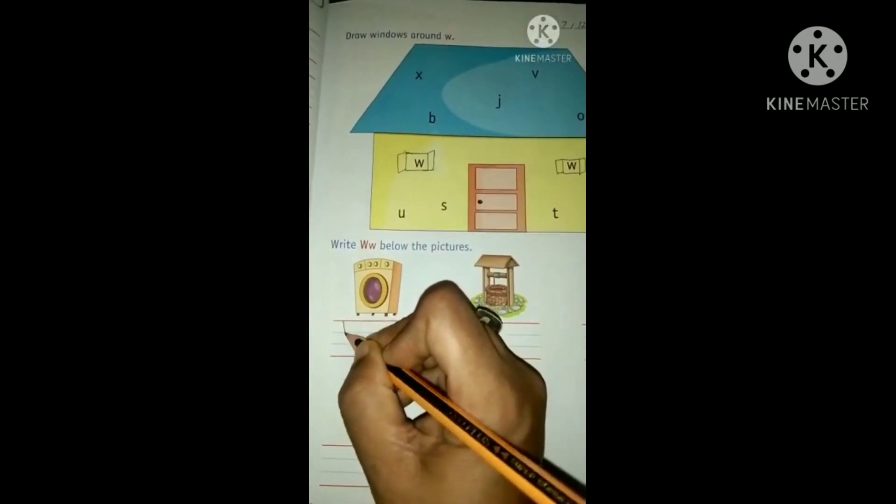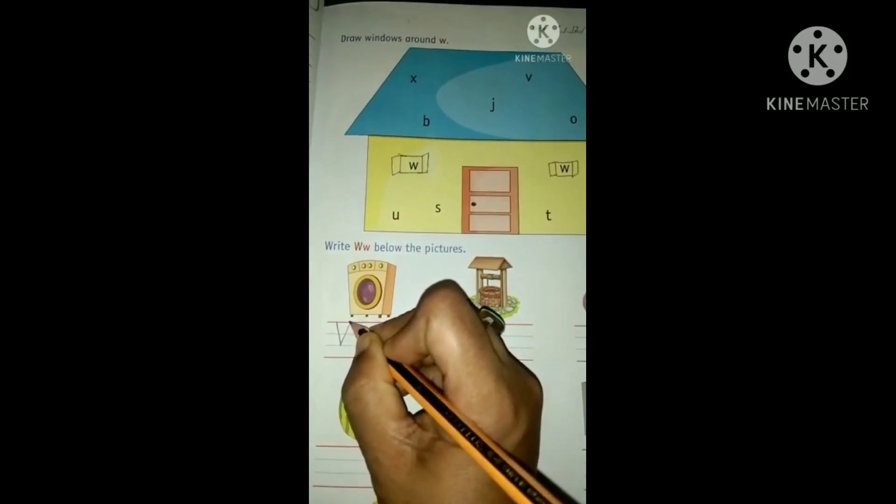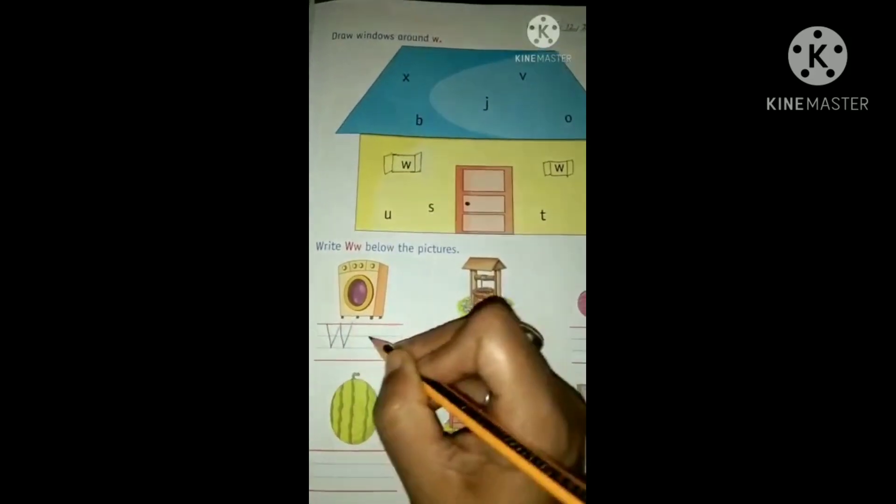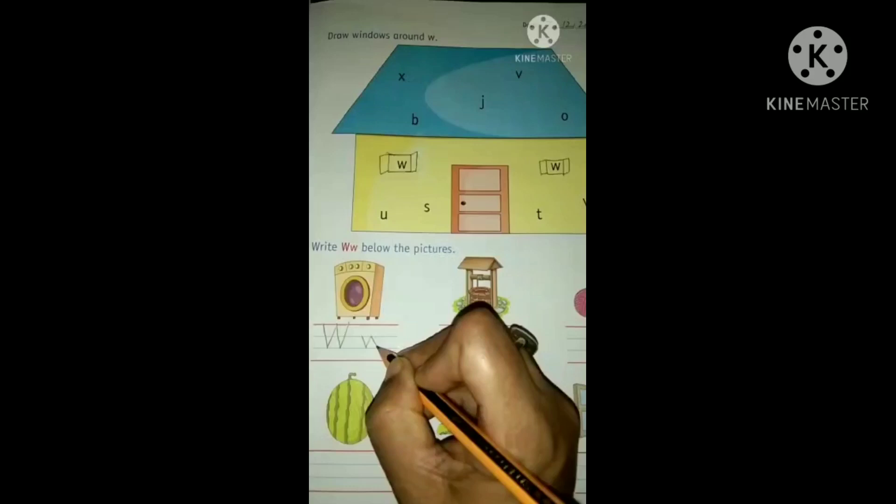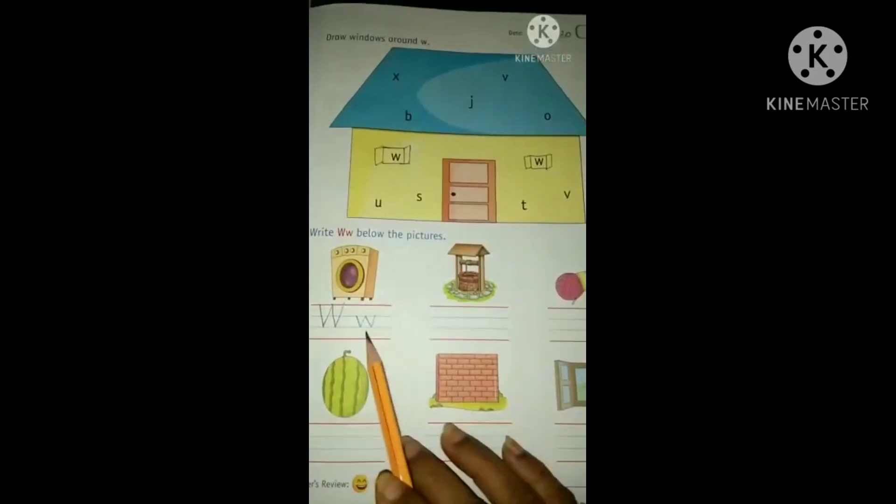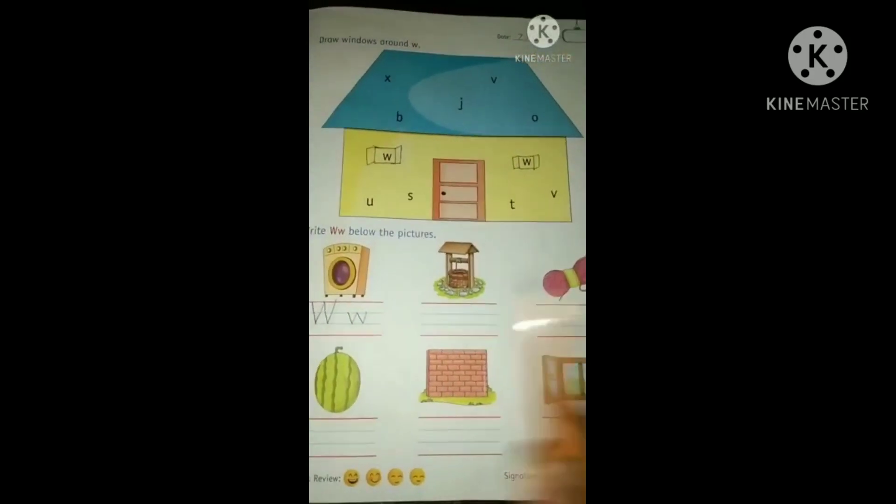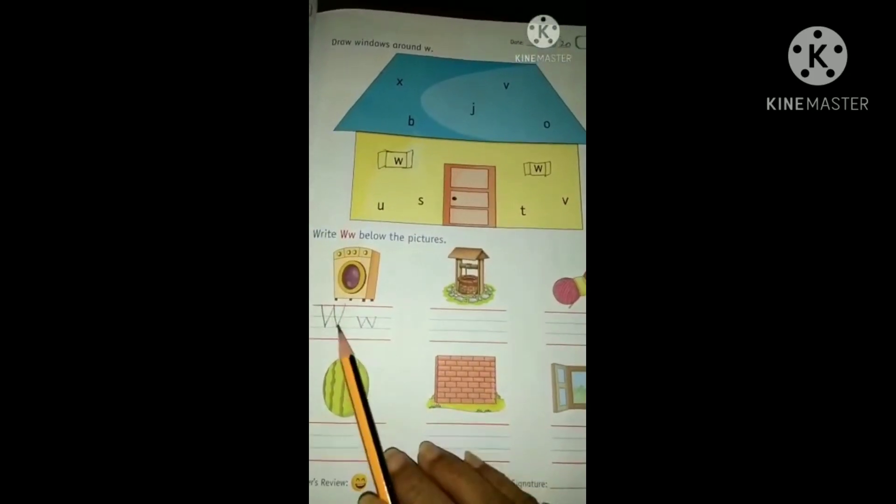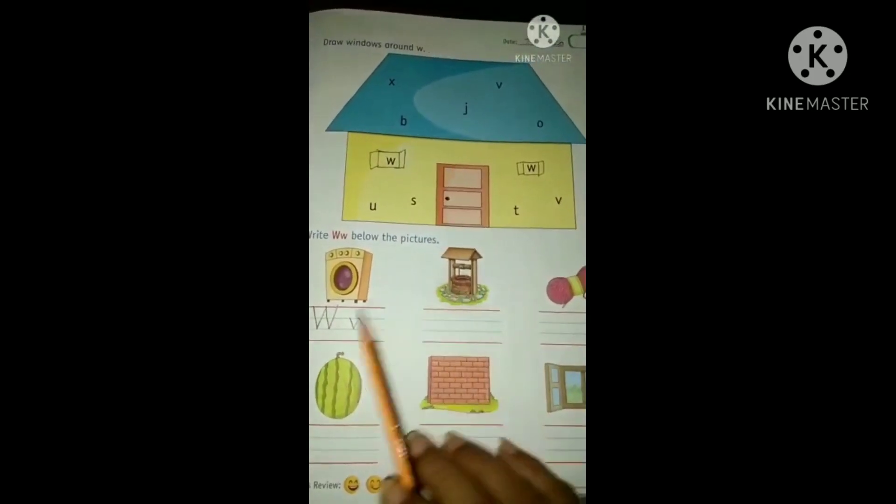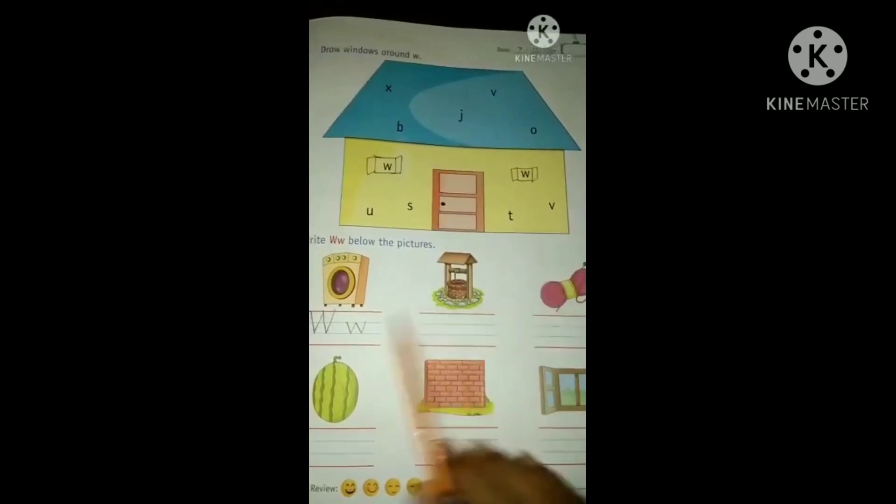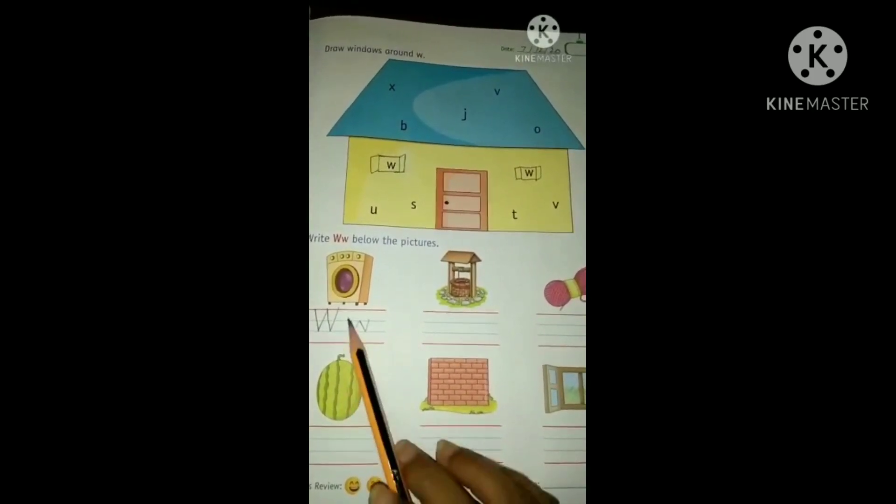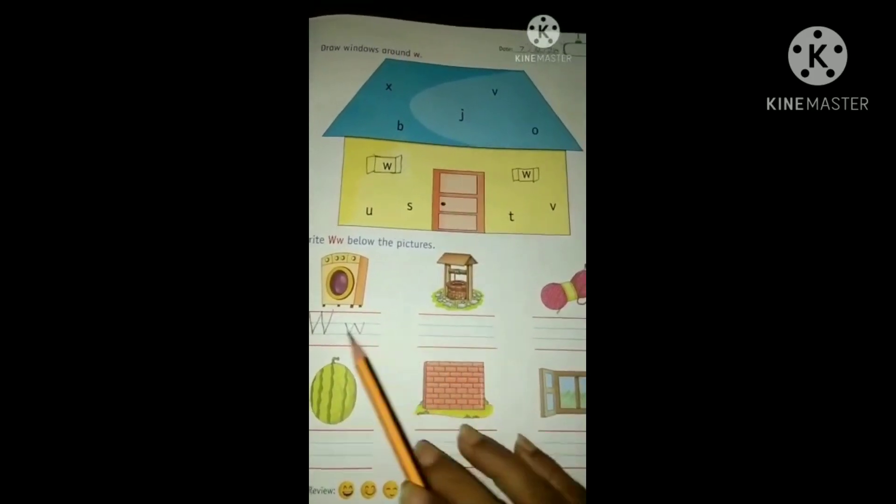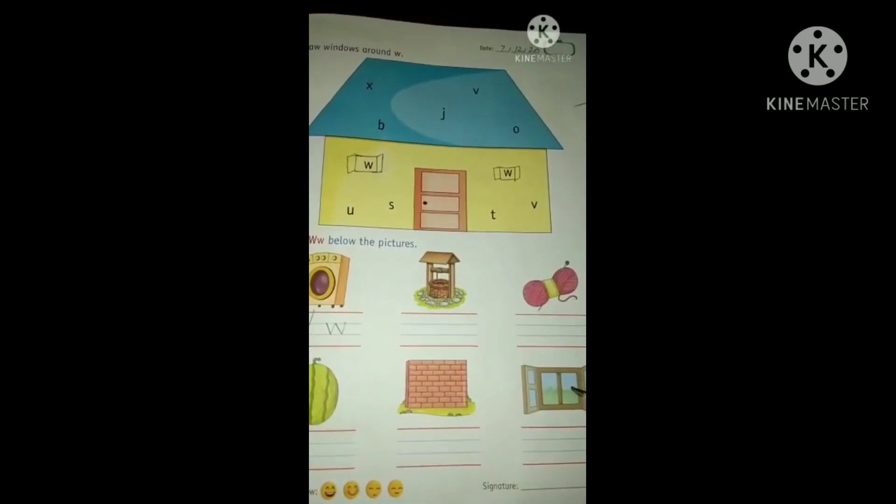Now see, write W below the pictures. So, W for washing machine. See, capital and small. And you know, you have to write below these pictures. W for washing machine, W for well, W for wool, W for watermelon, W for wall, W for window.